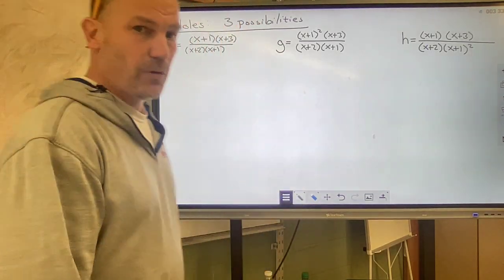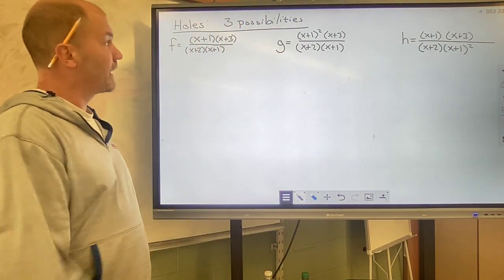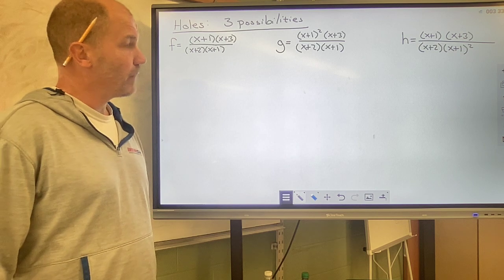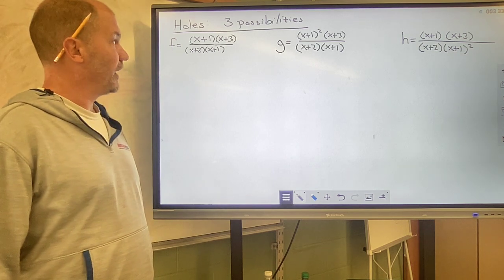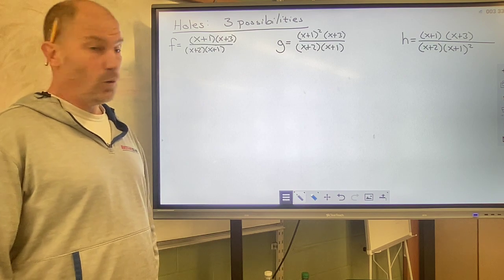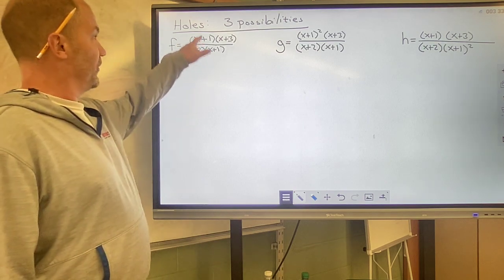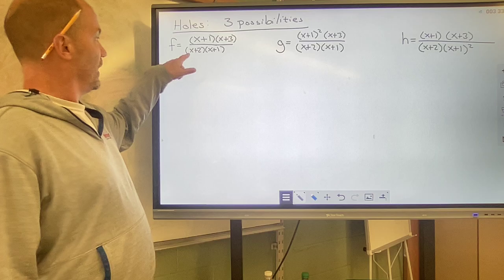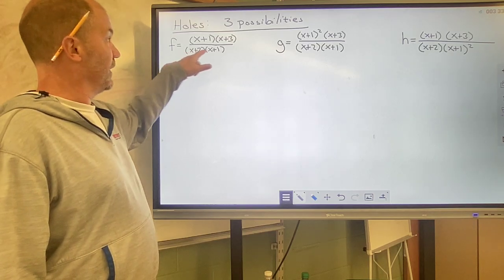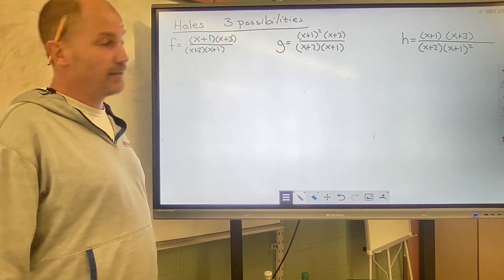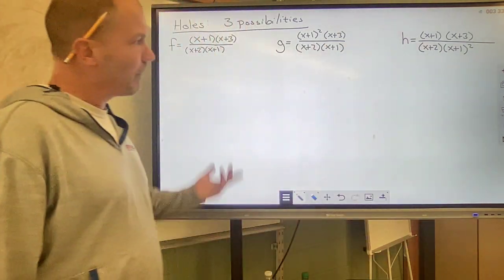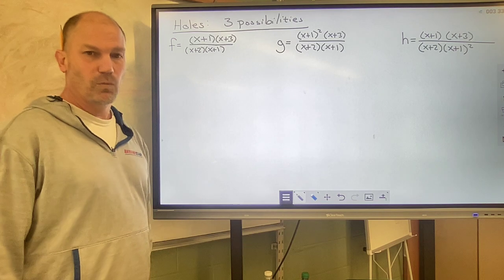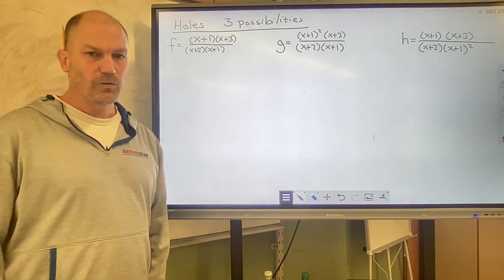All right, so by now we should be able to look at these factored rational functions and understand that there is a potential hole at x equals negative 1 for this function, a vertical asymptote at x equals negative 2, and a zero at x equals negative 3. And if you look down the line, you should see x equals negative 1 is a possible hole for all of them.